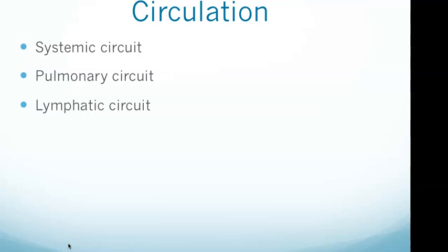The systemic circuit carries oxygenated blood away from the left ventricle and returns deoxygenated blood to the right atrium. The pulmonary circuit contains the blood vessels that carry blood to and from the lungs. The lymphatic system drains toxins and wastes from body tissues and removes foreign entities from circulation. All three of these are important to know.